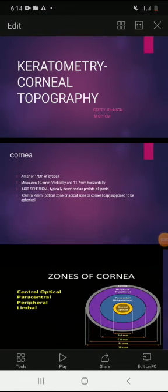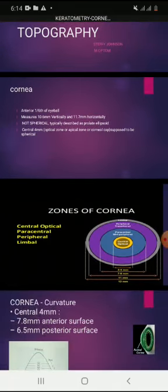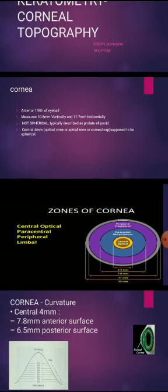Good evening everyone. Today I'm going to talk about the topic keratometry. Before going to this topic, I would like to tell something about the cornea. We all know that the cornea is the most important structure of our eyeball because it is transparent, and this transparency will help us to achieve vision. There are different types of instruments available for measuring the different dimensions of the cornea.